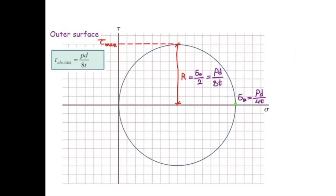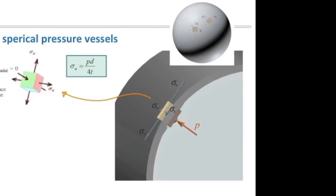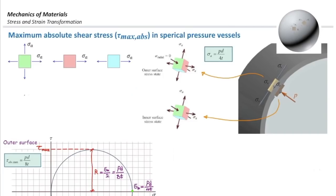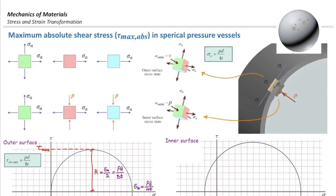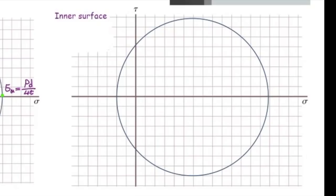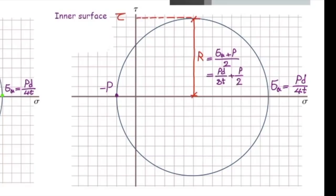Now let's look at the inner element. The difference between the inner and outer element is that on the inner element, a normal stress exists in the radial direction because the inner element sees the internal pressure. The green element remains the same, but the red element changes — there will be a normal stress of negative p on the sides. That pressure is negative, so the effective stress gets larger by p. The maximum shear stress in this case is (σ_a + p) / 2.